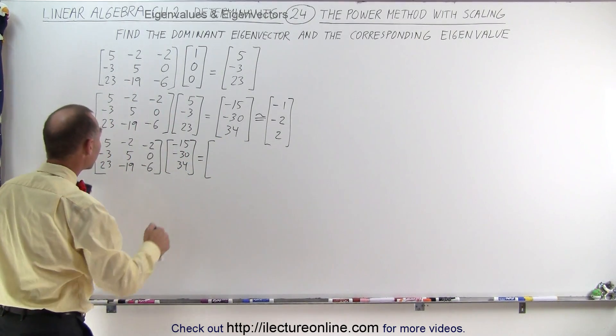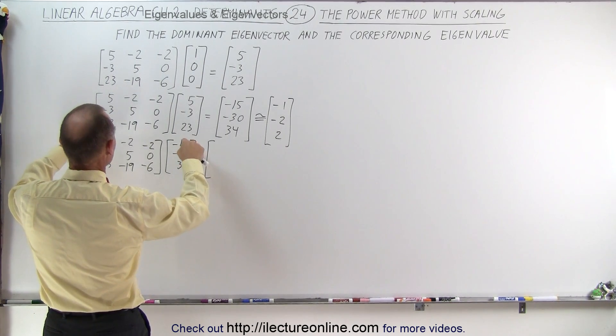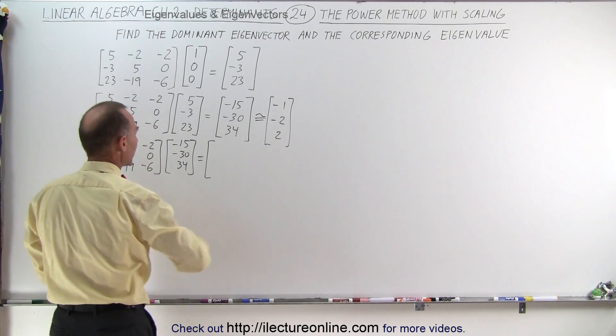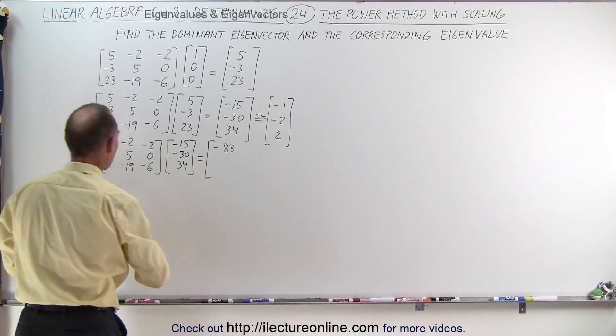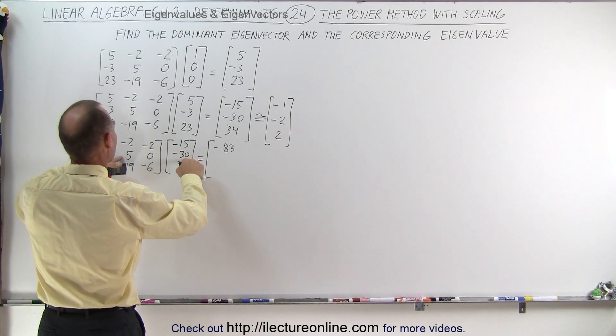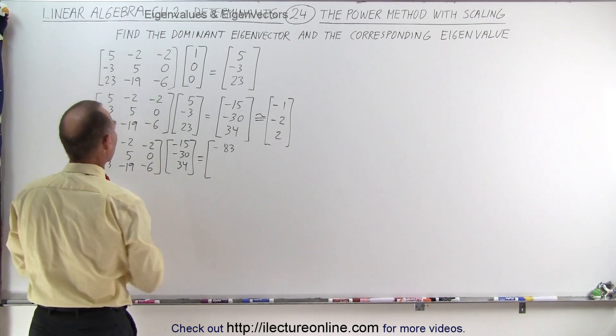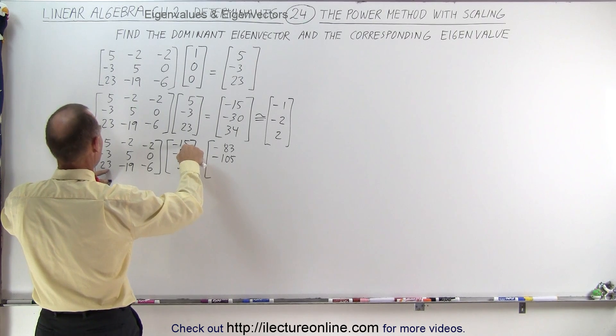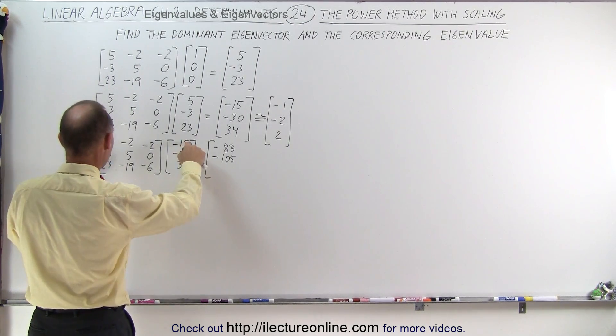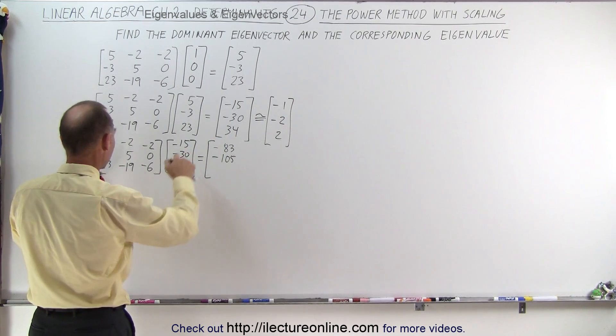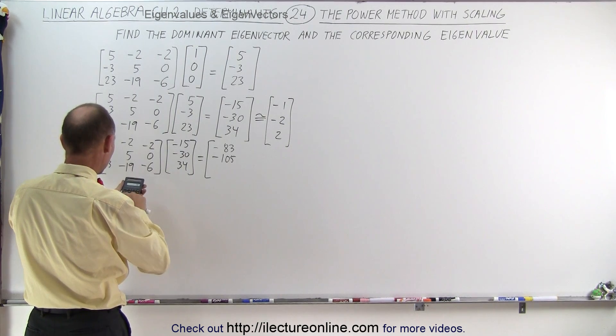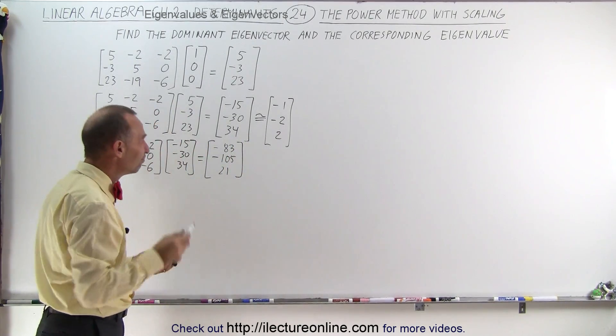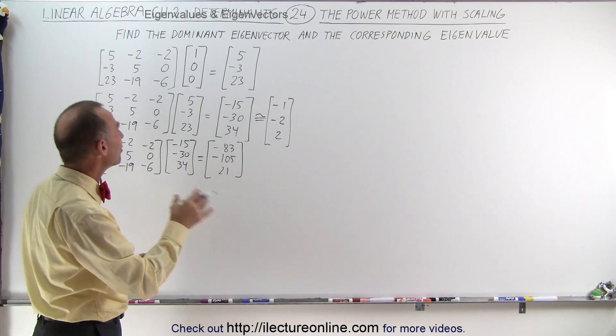Good thing we have calculators because it would get quite complicated. Minus 75 plus 60 is minus 15. Minus 68 is 78. That's minus 83. 45 minus 150. That's minus 105. And 23 times minus 15 plus 19 times 30 minus 6 times 34. And I get 21. I don't think there's any reason to try to scale it yet. So let's continue and see what we get.